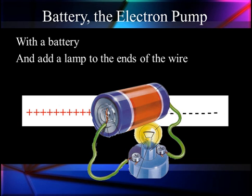With a battery, if we add a lamp, we can take the positive excess positives on the left and the excess electrons on the right. Now remember, excess positive means you don't have enough electrons. They must be positive ions.